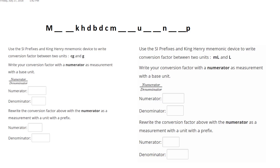In this lesson, we are going to use the SI Prefixes and Mighty Ken Henry mnemonic device to write conversion factors between two units. Here, I have the Mighty Ken Henry — I only wrote the first letters.